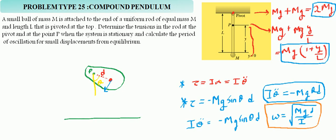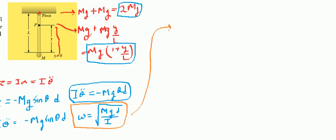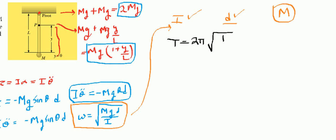We will now use this formula for the specific pendulum given in the question. First, find the value of I; second, find where the center of mass is located. M here is the total mass of the compound pendulum — the sum of masses of the ball and the rod. D is the distance from the fixed point to the center of mass, and g is 9.8. The time period is 2π divided by omega, which equals 2π times the square root of I divided by (mGd). The total mass is M (rod) + M (ball) = 2M.